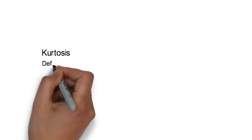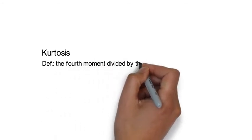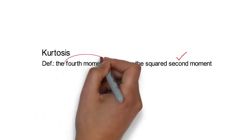Let's move on to the kurtosis. Kurtosis is defined as the fourth moment divided by the squared second moment. We have already determined the second moment, so now we need the fourth moment.